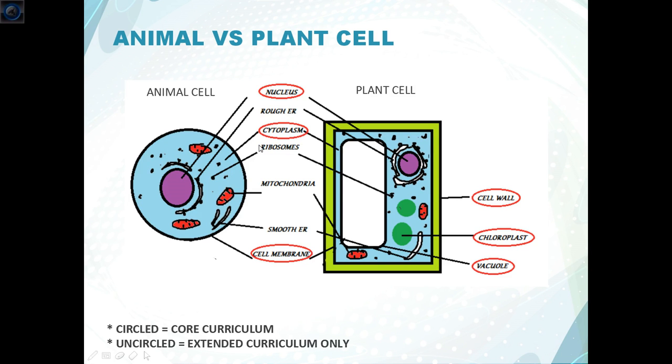Cytoplasm is what we have here, represented by the blue color, is a jelly-like substance which contains particles and organelles. Organelles is just something that you call a structure that is present in a cell. So all of these things here, they're organelles. So the cytoplasm is a jelly-like substance which contains particles and organelles and is contained by the cell membrane which I will explain to you now.